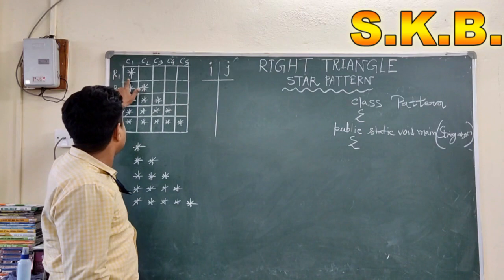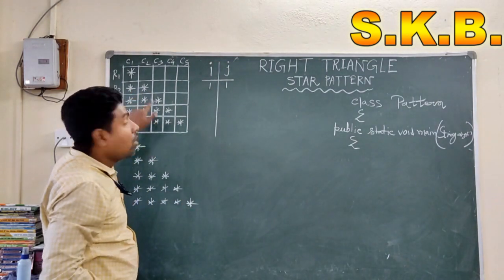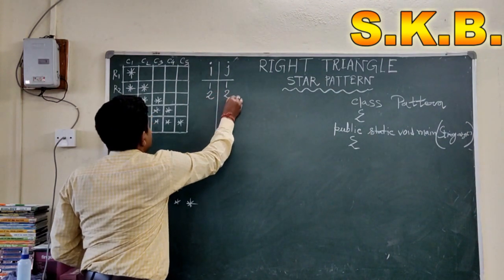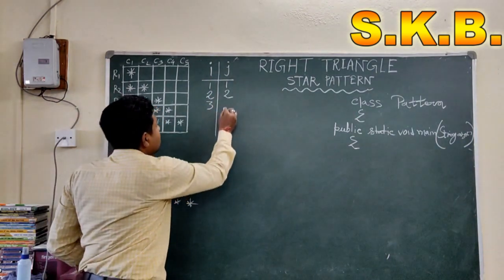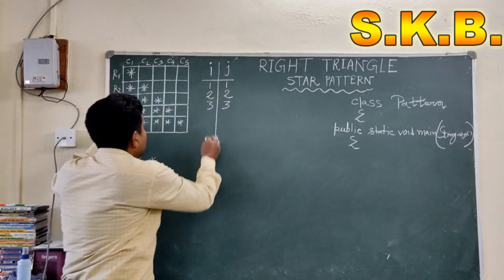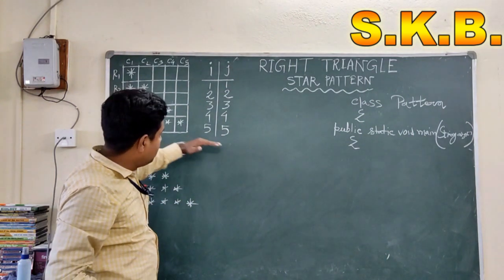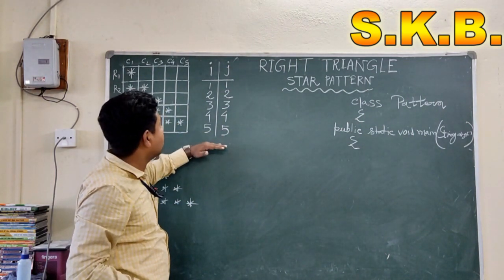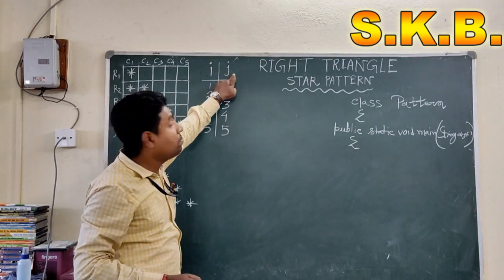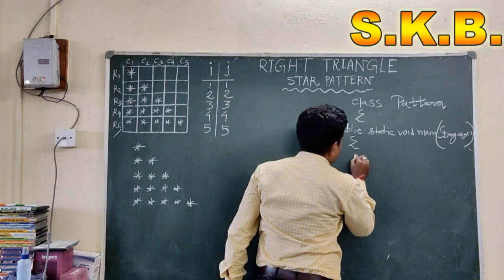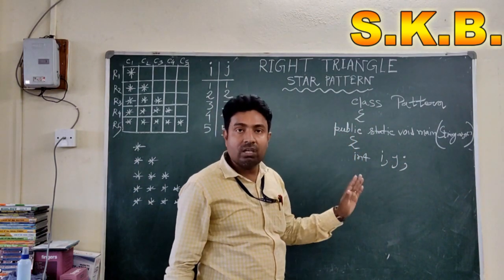I is used to print the row values and J is used to print the column values. All stars are printed column-wise. Row 1 has one star; row 2 has two stars; row 3 has three stars; row 4 has four stars; row 5 has five stars. That is the basic logic. I represents the row number and J represents the column number, so we take two variables I and J for the for loops to represent rows and column values.